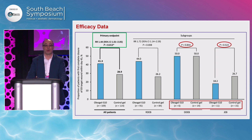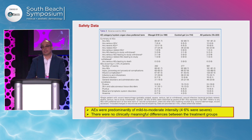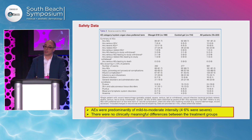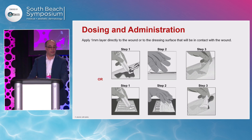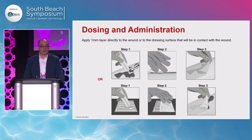Regarding safety, adverse events were primarily mild to moderate in intensity, and there were no clinically significant differences between the Oleogel group and the control group. In terms of application, you apply it directly — one millimeter — into the wound, or you can apply it on the dressing surface that will be in contact with the wound.